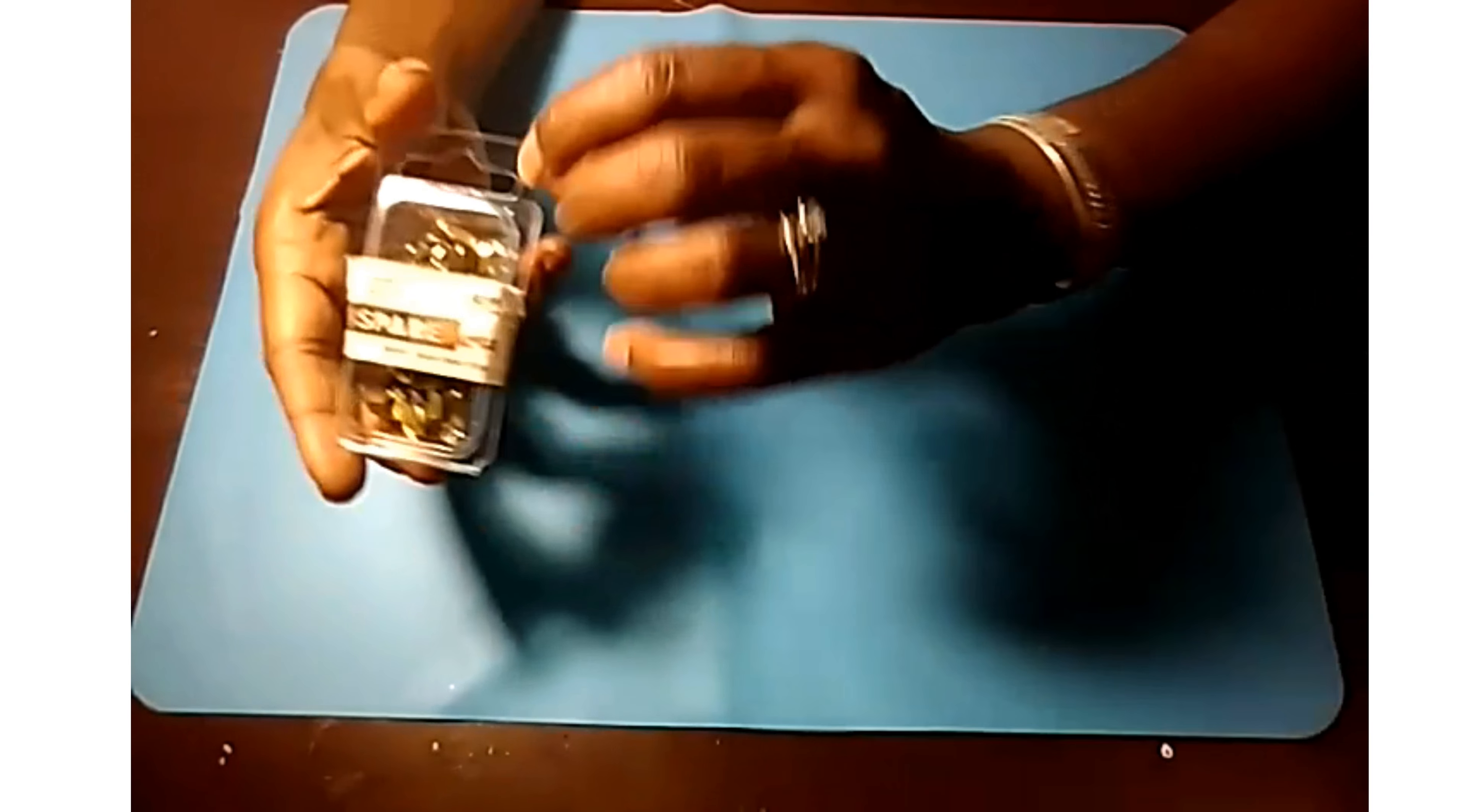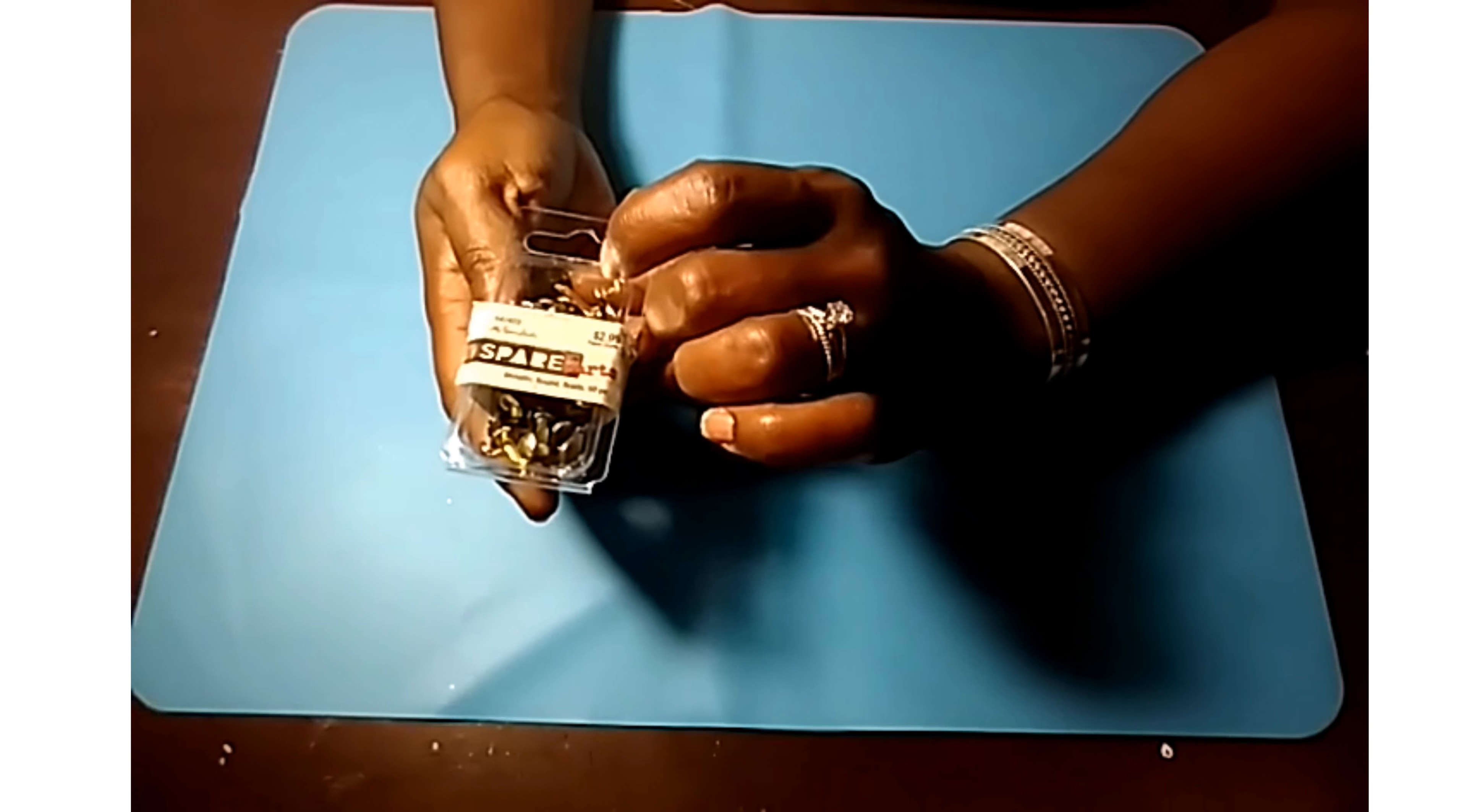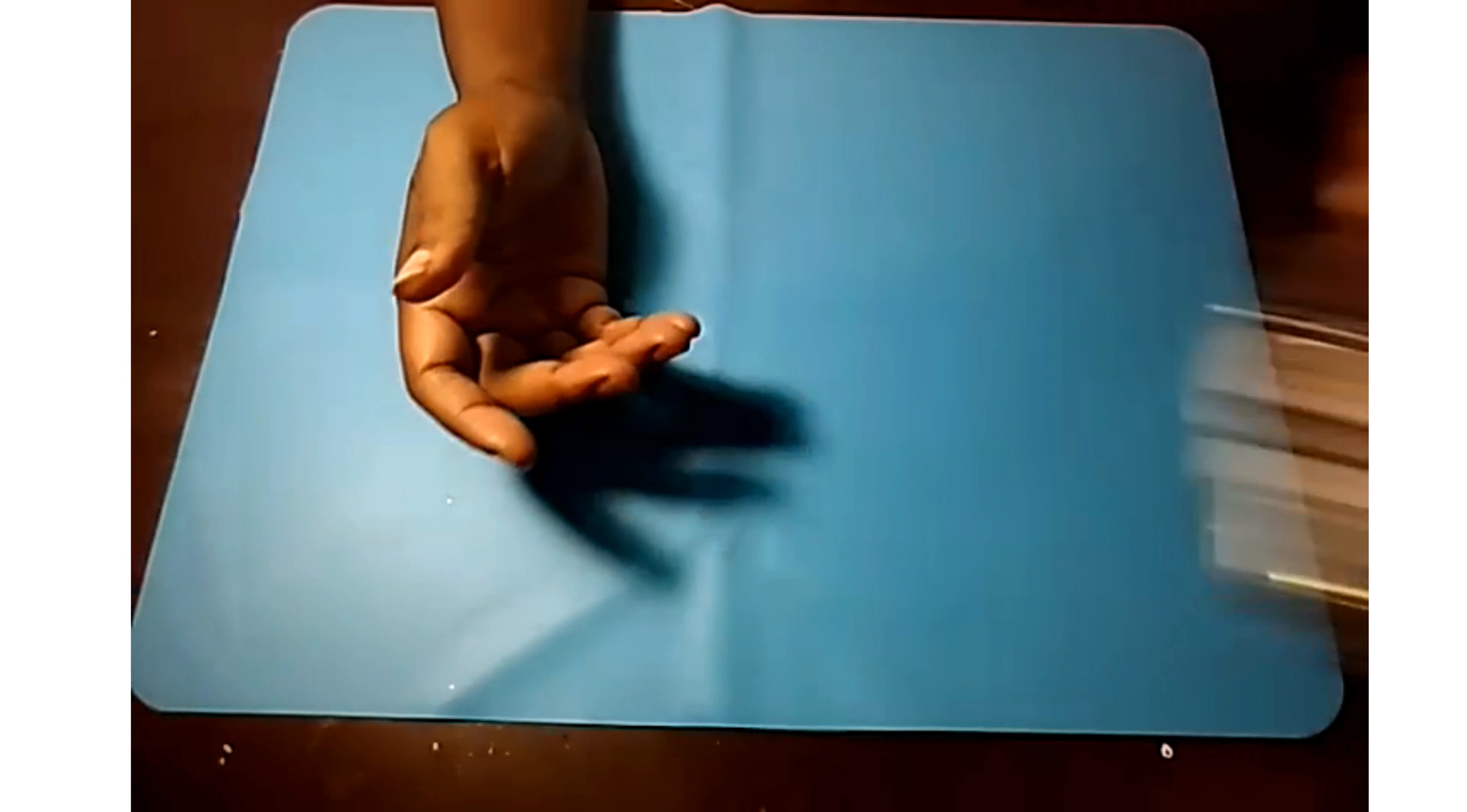I got brads for some journals that I'm putting together, some altered journals. This comes with, there's 50 of them in here, but it has like a pewter tone, silver tone, gold, and a rose gold in here. So they were on sale as well by the paper studio.